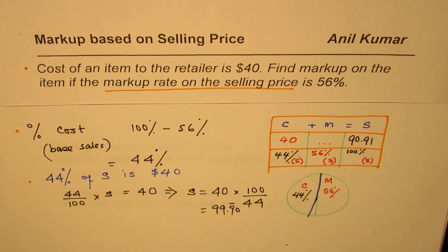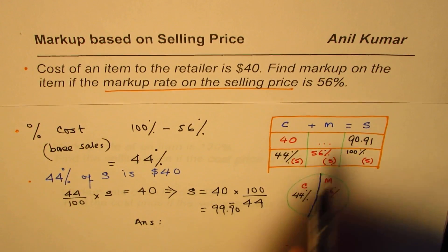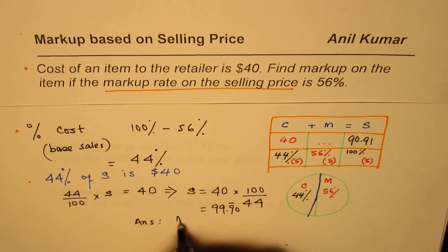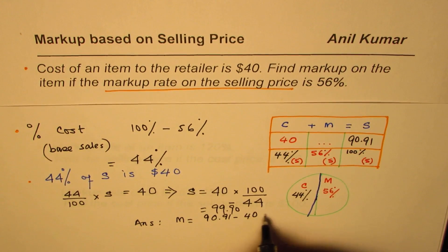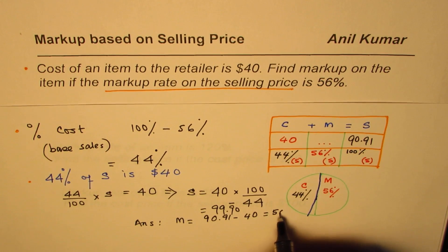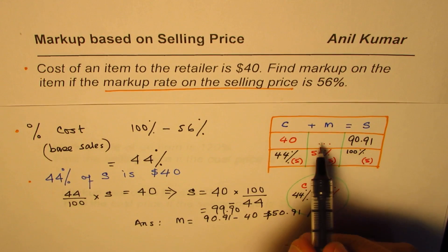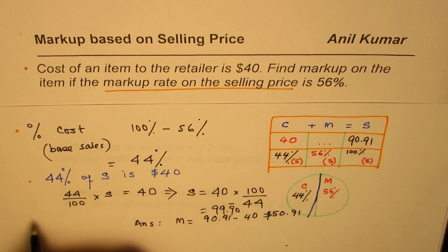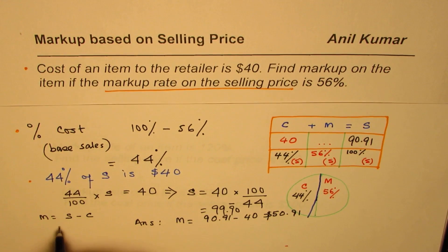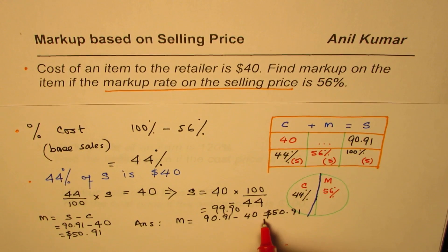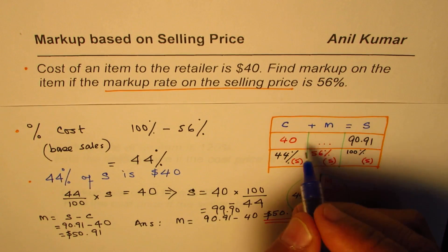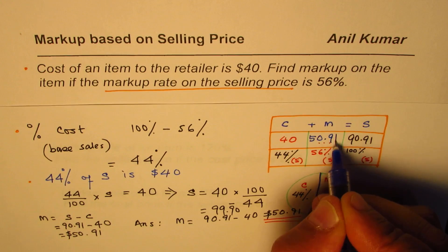Now we need to find the markup. Markup M equals selling price minus cost price, which is $90.91 minus $40, giving us $50.91. To find the markup, we take sales minus cost price: $90.91 minus $40 equals $50.91. That is your answer.